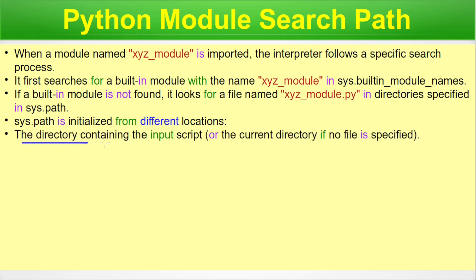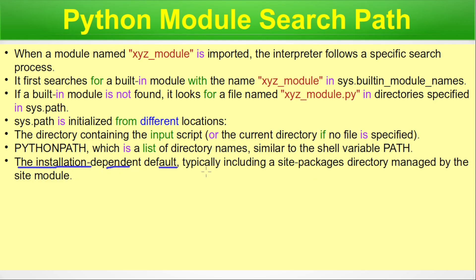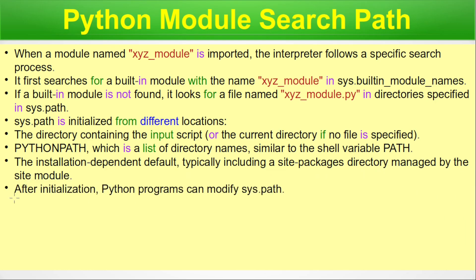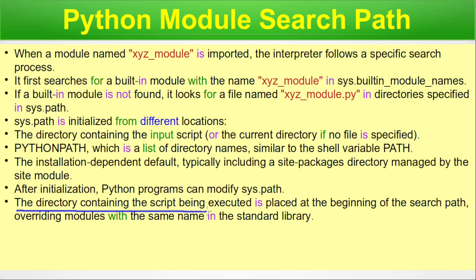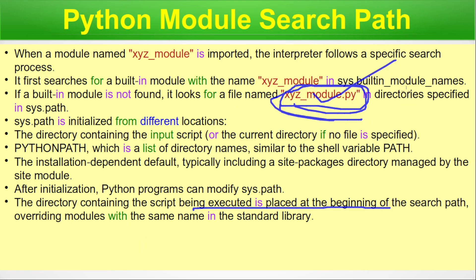sys.path is initialized from different locations: the directory containing the input script (or the current directory if no file is specified), the PYTHONPATH environment variable — a list of directory names similar to PATH — and the installation-dependent default, typically including the site-packages directory managed by the site module. After initialization, Python programs can modify sys.path. The script's directory is placed at the beginning of the search path, overriding modules with the same name in the standard library.